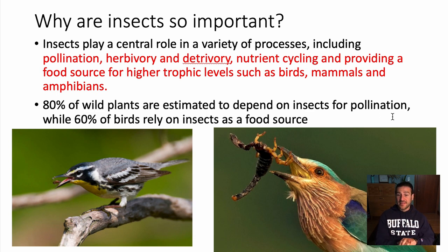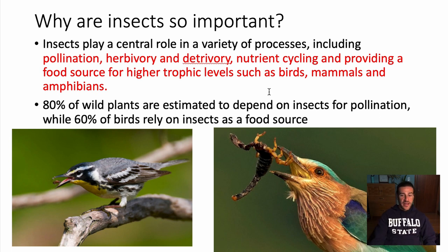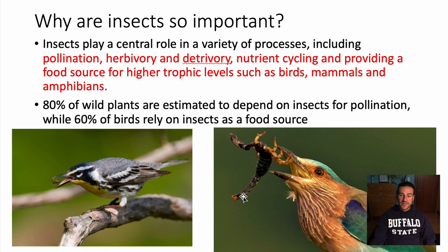80 percent of wild plants are estimated to depend on insects for pollination, while 60 percent of birds rely on insects as a food source — some rather large numbers that you can't ignore. As a side note, the image here is a scorpion, which is not an insect — scorpions are chelicerates, actually more ancient evolutionarily than insects.